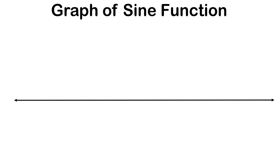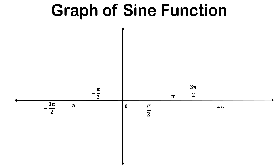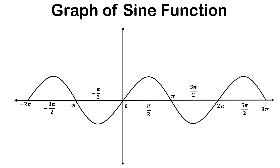Let us draw the graph of the sine function. This is the x-axis and y-axis. We label angles on the x-axis: 0, π/2, π, 3π/2, 2π, and also -π/2, -π, -3π/2, -2π, and 5π/2, 3π. We shall draw the graph of the sine function from -2π to 3π — this is the graph of the sine wave.